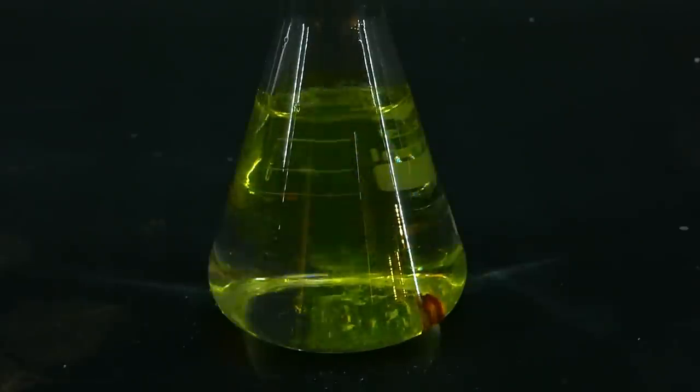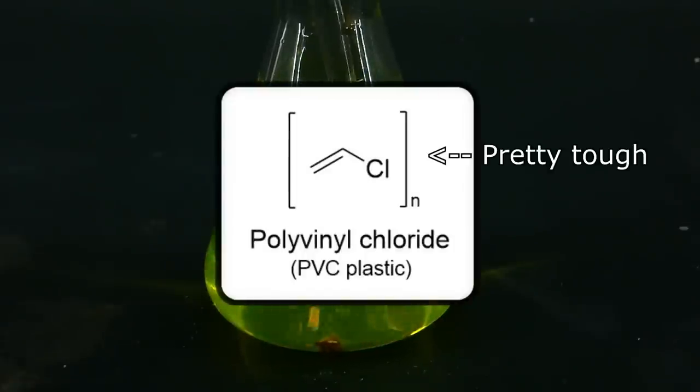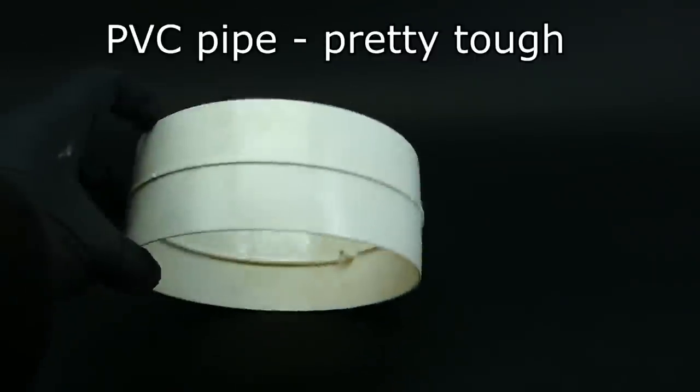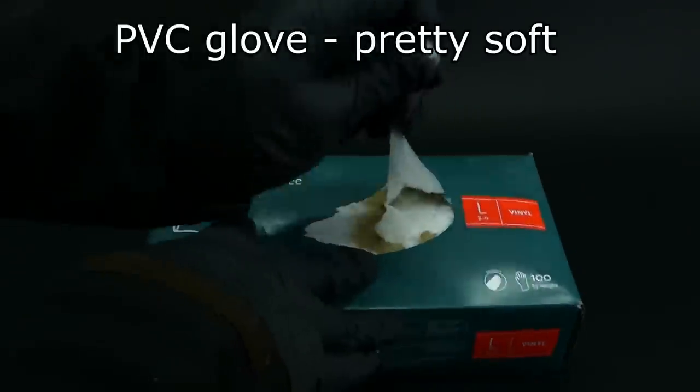For example, the very commonly used PVC or polyvinyl chloride plastic is normally pretty tough, and this form is used in plumbing, but after the addition of a plasticizer, it becomes soft and malleable, and is used in vinyl gloves.